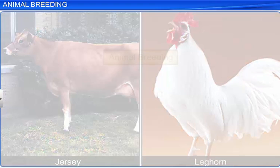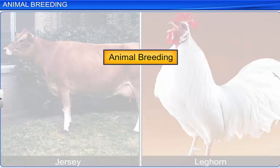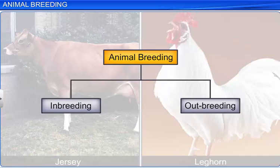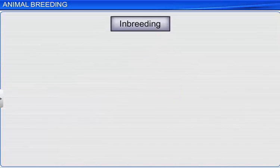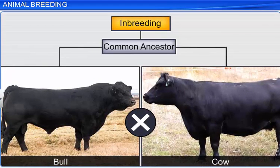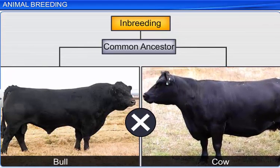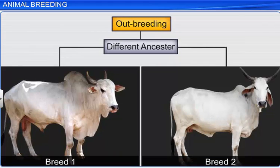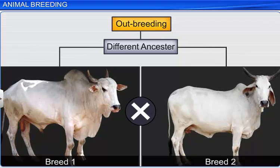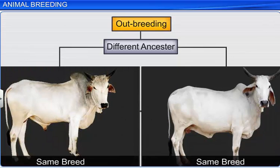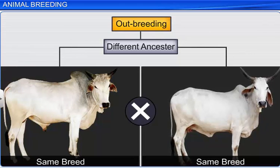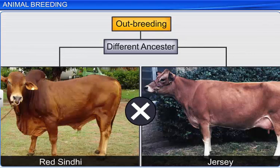Animal breeding is divided into two main categories: inbreeding and outbreeding. Inbreeding is breeding between animals belonging to the same breed with a common ancestor, whereas outbreeding is breeding between animals belonging to different breeds, or between the same breed but with different ancestors, or between different species.